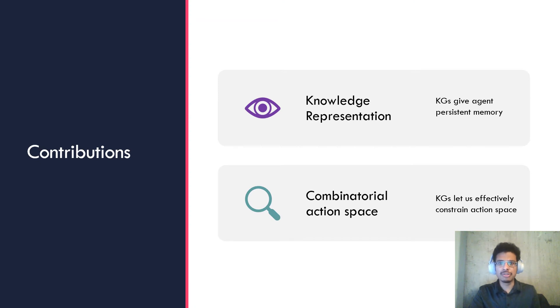This paper has two core contributions. The first extends previous work to show how knowledge graphs help with knowledge representation by giving agents persistent memory. The second contribution shows how we can use knowledge graphs to constrain the combinatorially sized action space, enabling more efficient exploration.